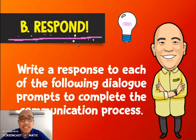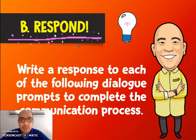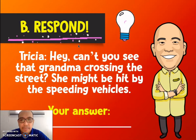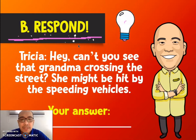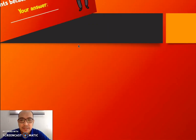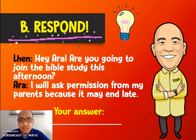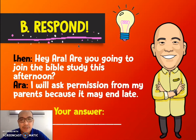Next, we have the second offline activity, entitled 'Respond.' The instruction is to write a response to each of the following dialogue prompts to complete the communication process. First dialogue: Trisha says, 'Hey, can't you see that grandma crossing the street? She might be hit by the speeding vehicles.' What could be your response? Next situation: Len says, 'Hey Ara, are you going to join the Bible study this afternoon?' Ara replies, 'I will ask permission from my parents because it may end late.' What could be your response?